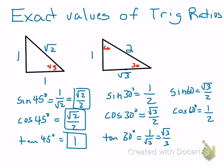The tangent of 60 degrees is equal to the square root of 3 over 1. So those are the other six exact values for the trig functions of the special angles.